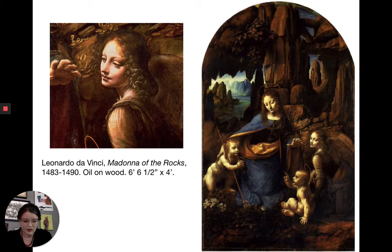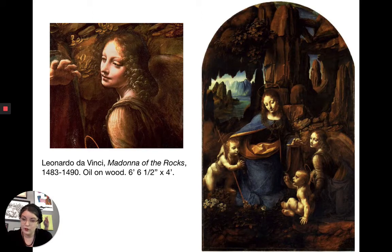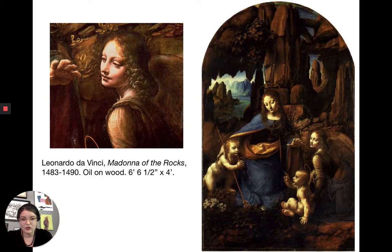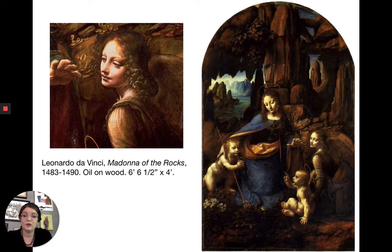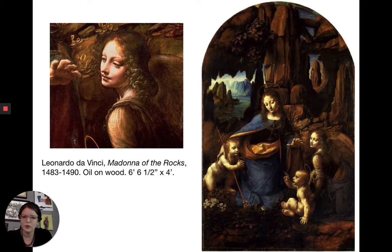The Madonna of the Rocks is a pretty wonderful painting. Leonardo paints it after he moves to Milan, where he makes most of his masterpieces. In it we have the Virgin Mary in the center, John the Baptist, the Christ child, and an angel. One of the key things about this work is how Leonardo interprets composition differently from anyone else at the time, essentially developing a new standard for these kinds of portraits.